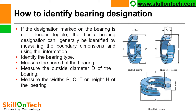How to identify bearing designation: if the designation marked on the bearing is no longer legible, the basic bearing designation can generally be identified by measuring the boundary dimensions — the inside diameter, outside diameter, and width of the bearing. Measure the bore diameter d, outside diameter D, and width B, C, T, or H — or H in the case of a thrust bearing.